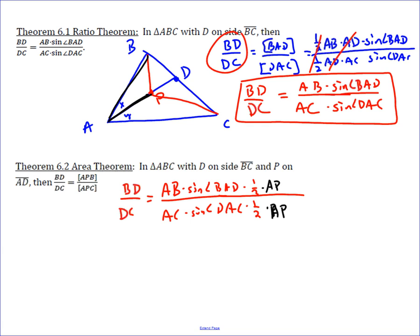which by itself equals the area of APB, and then one-half AP times AC sine of DAC equals the area of APC,